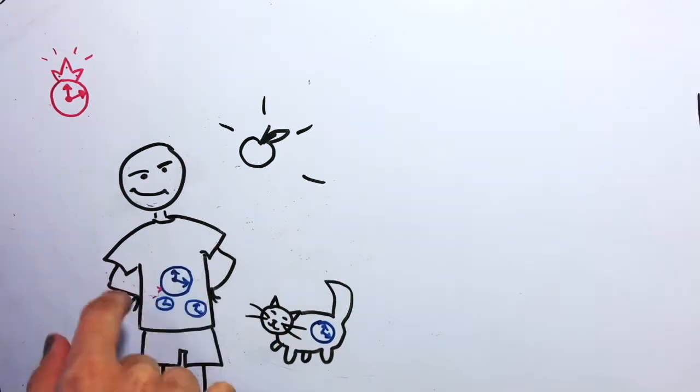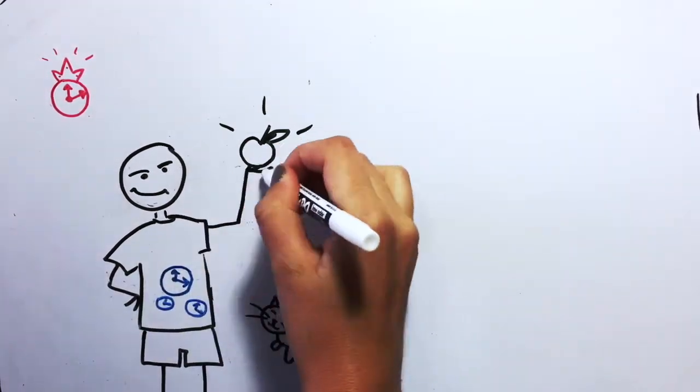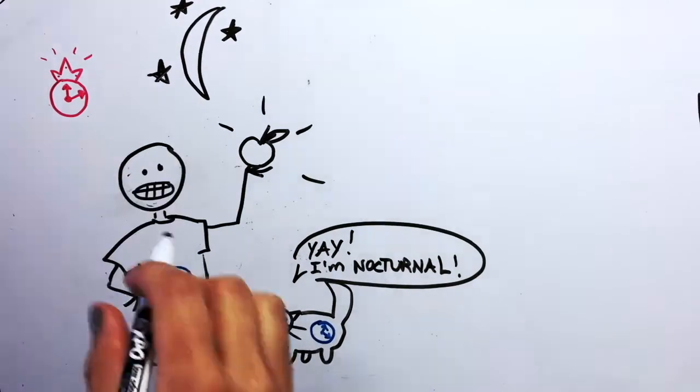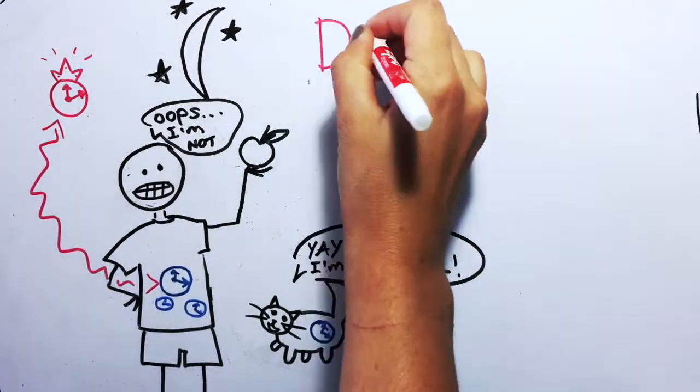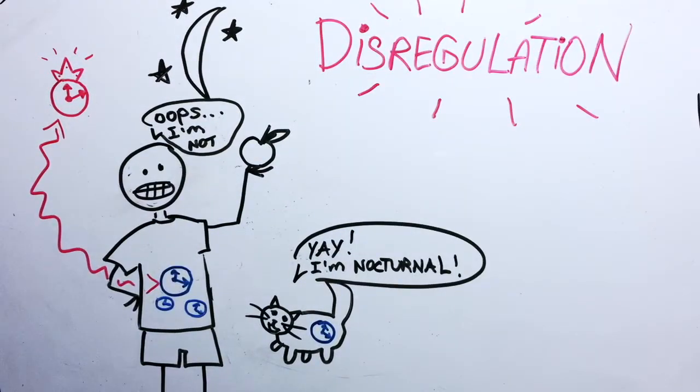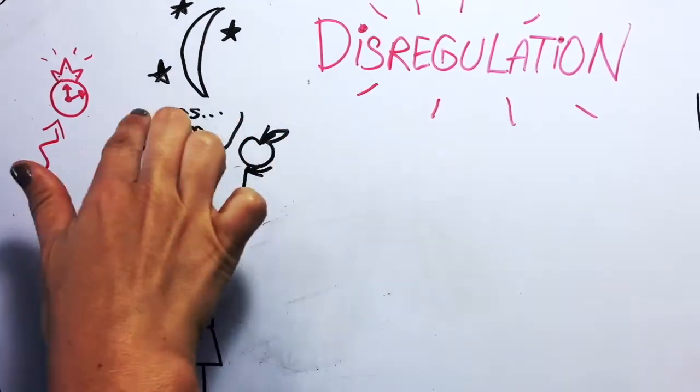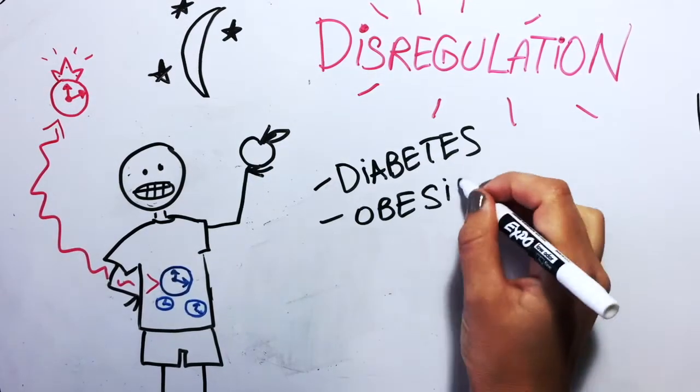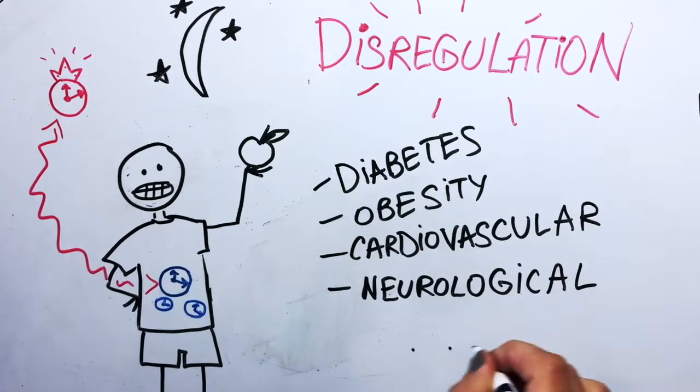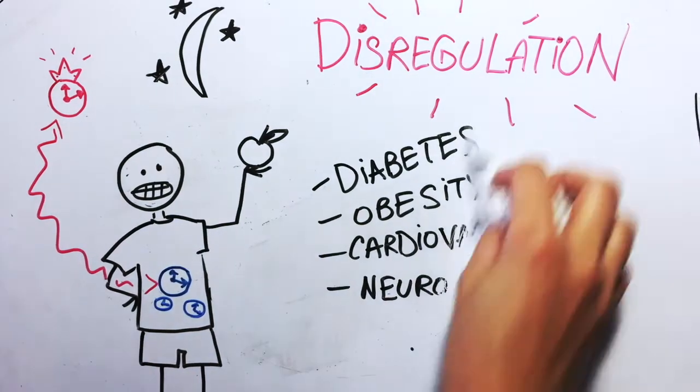So eating at the wrong time of the 24-hour cycle, which for humans would be at night, can uncouple the peripheral clocks from the master clock, causing disturbances in how the body functions, and that can lead to different health problems: diabetes, obesity, cardiovascular disease, and even neurological disorders, such as depression.